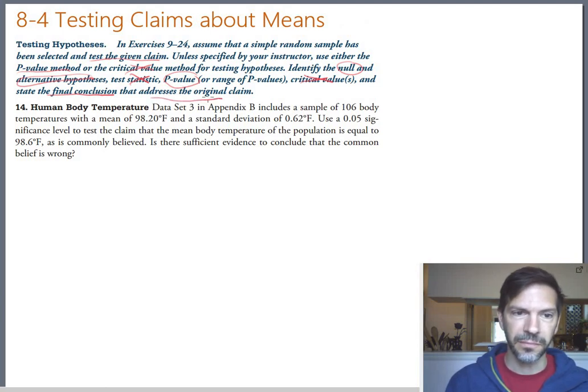Let's look at problem 14. Data set 3 in Appendix B includes 106 body temperatures. Thankfully we don't actually have to go back to Appendix B and look at those because they give us the summary statistics. The important bits here are n equals 106, the sample mean is 98.2, and the sample standard deviation is 0.62.